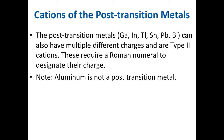The post-transition metal cations are gallium, indium, thallium, tin, lead, and bismuth. These can also have multiple charges and are Type 2 cations requiring a Roman numeral. Note that aluminum is not a post-transition metal — it is above them. Luckily, the post-transition metals tend to only have two different charges that are fairly easy to get acquainted with.